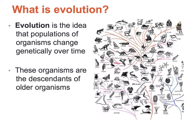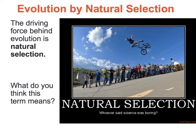Evolution is the idea that populations change over time in response to changes in their environment. Notice that all of the organisms here are related to one another. This is what we would call a phylogenetic tree. You can see how different species branched off and created new species, and again this is all based on the idea that we came from a common ancestor, located down here on the phylogenetic tree.